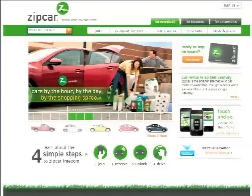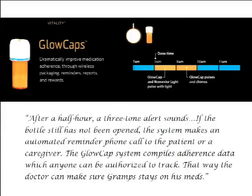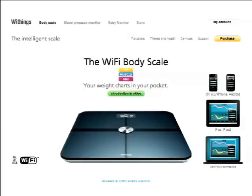We've got Zipcar where the web and mobile platforms are turning cars from products into services. We have mobile devices that are bristling with sensors, and we haven't really quite figured out what to do with them all yet. We have medicine bottles that can track our behavior, make phone calls, and in their own words, make sure Gramps stays on his meds. And we have smart scales that can tweet our weight — a good reminder that just because you can doesn't mean you should.